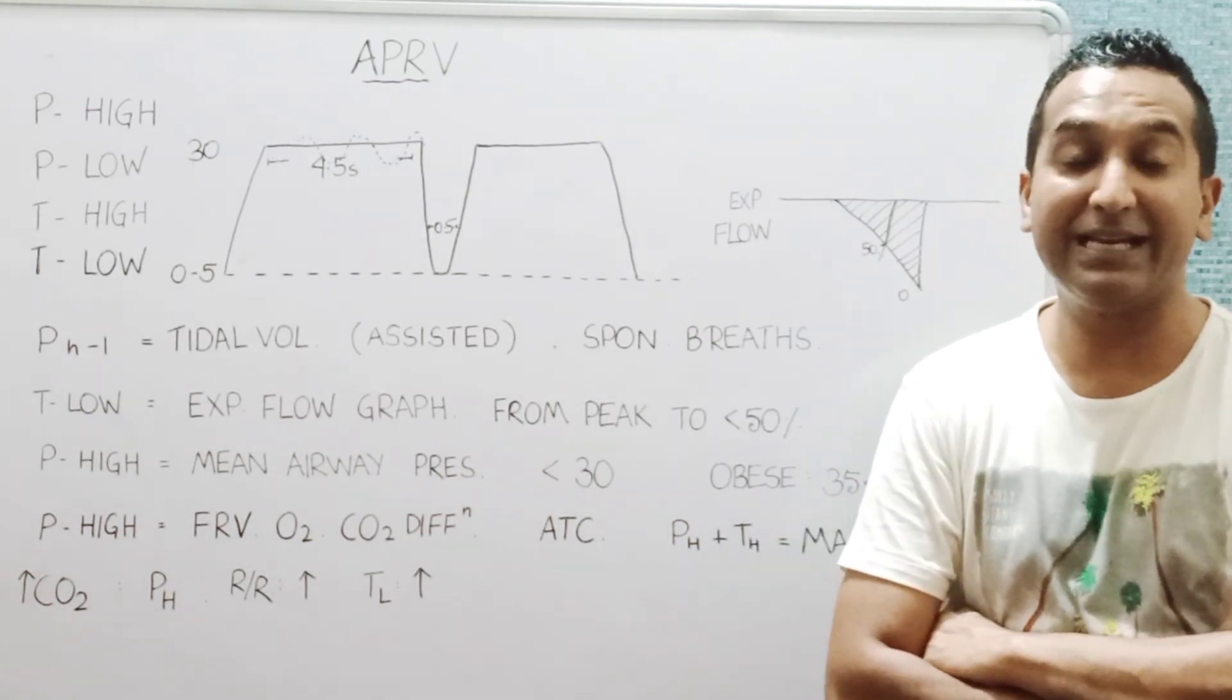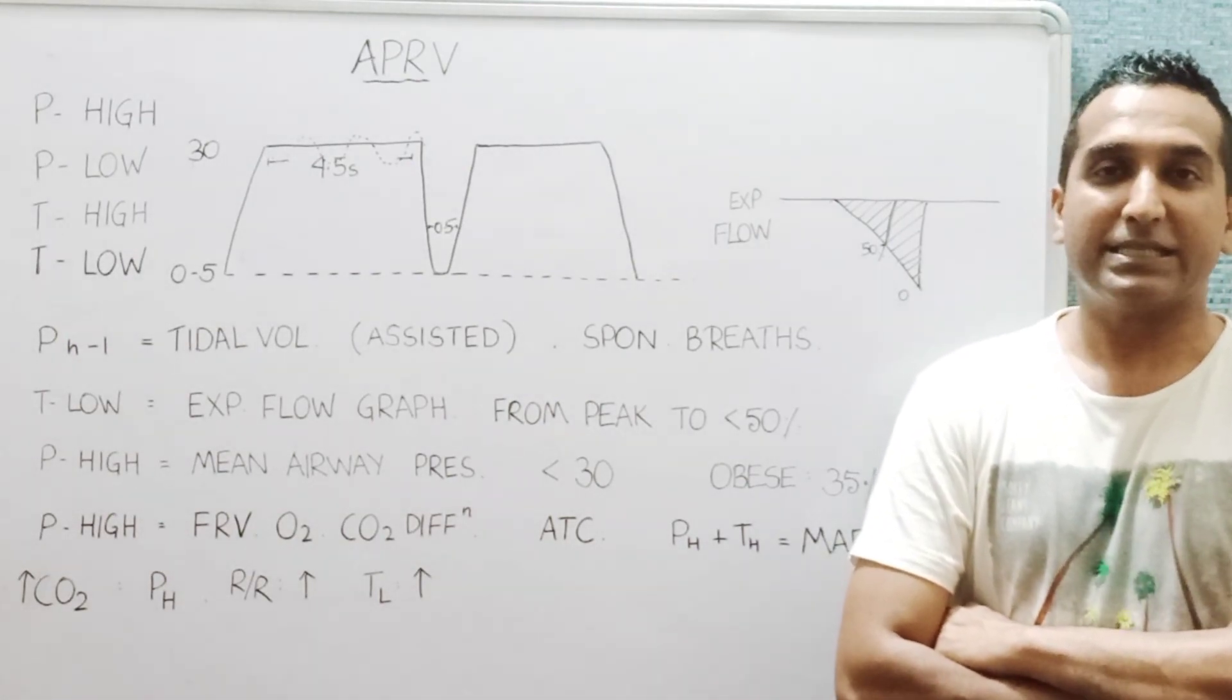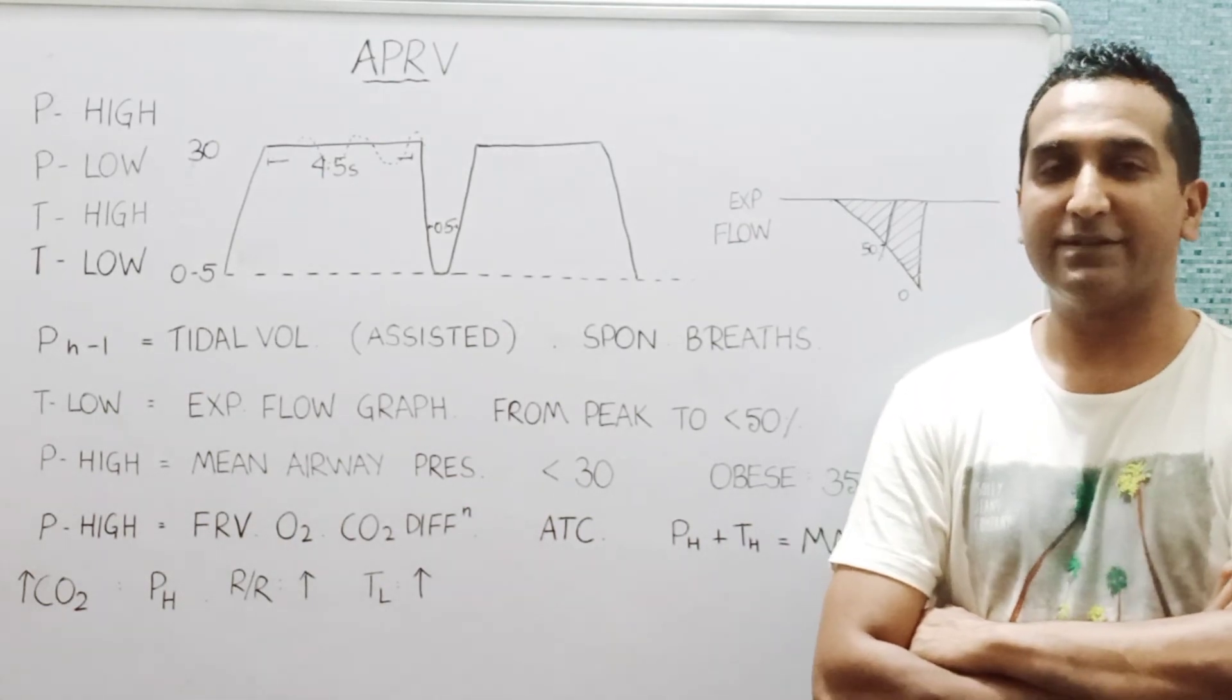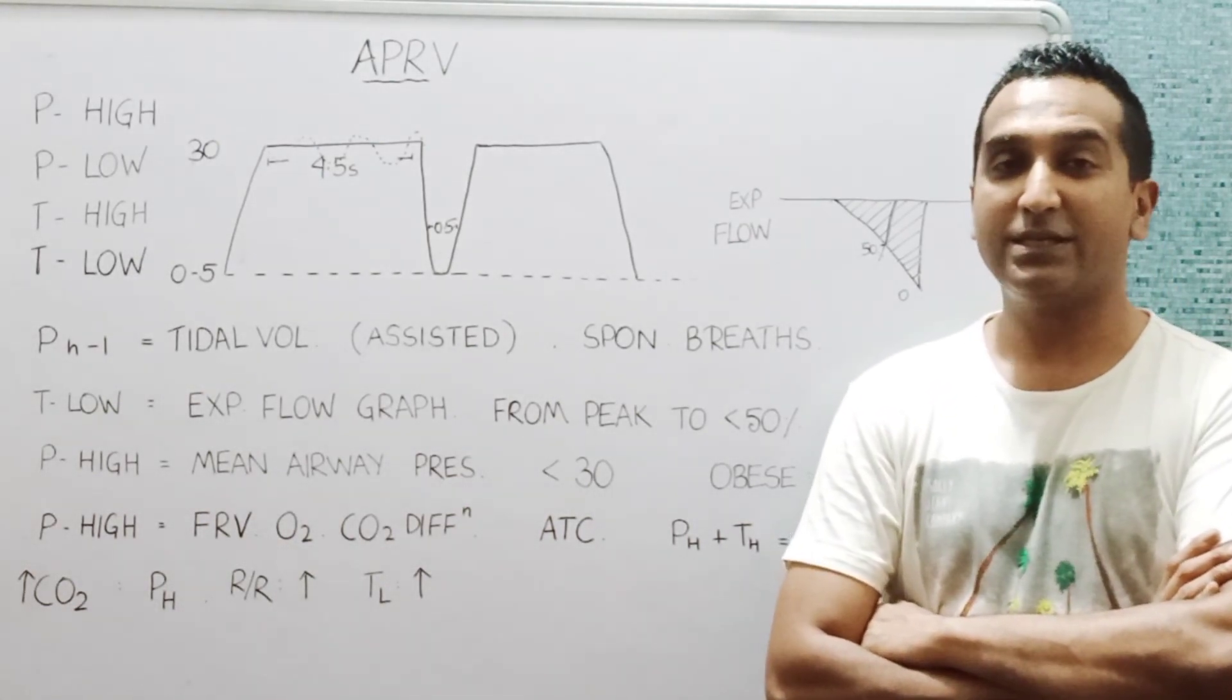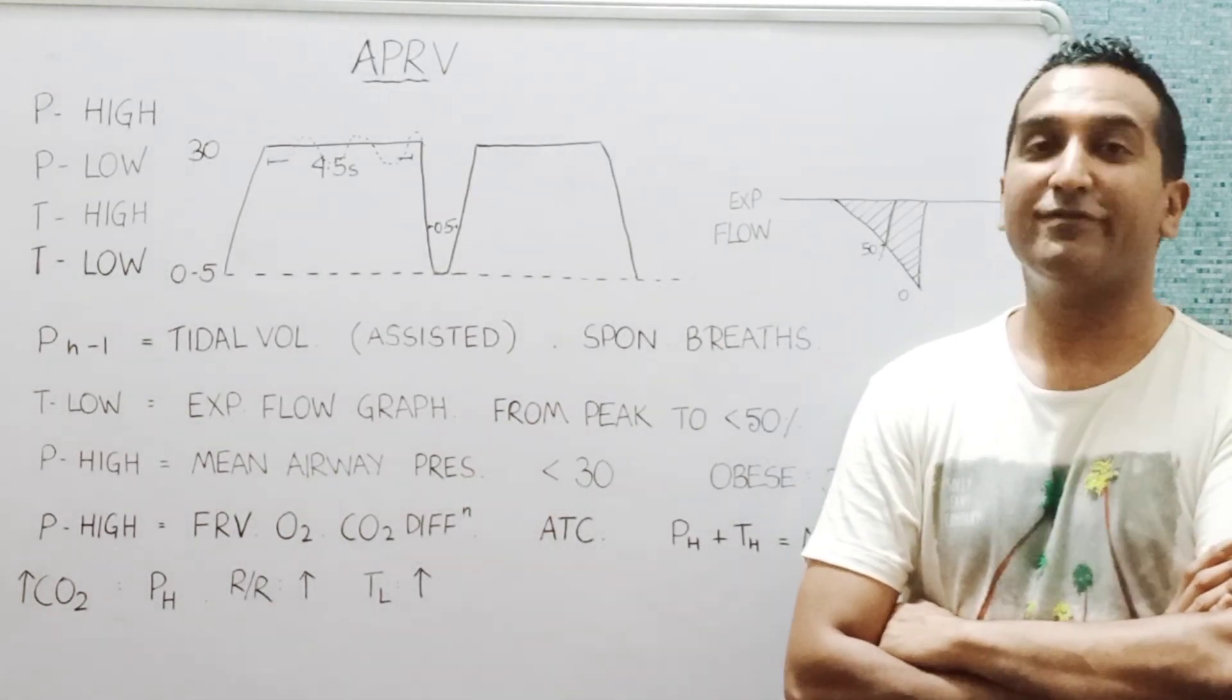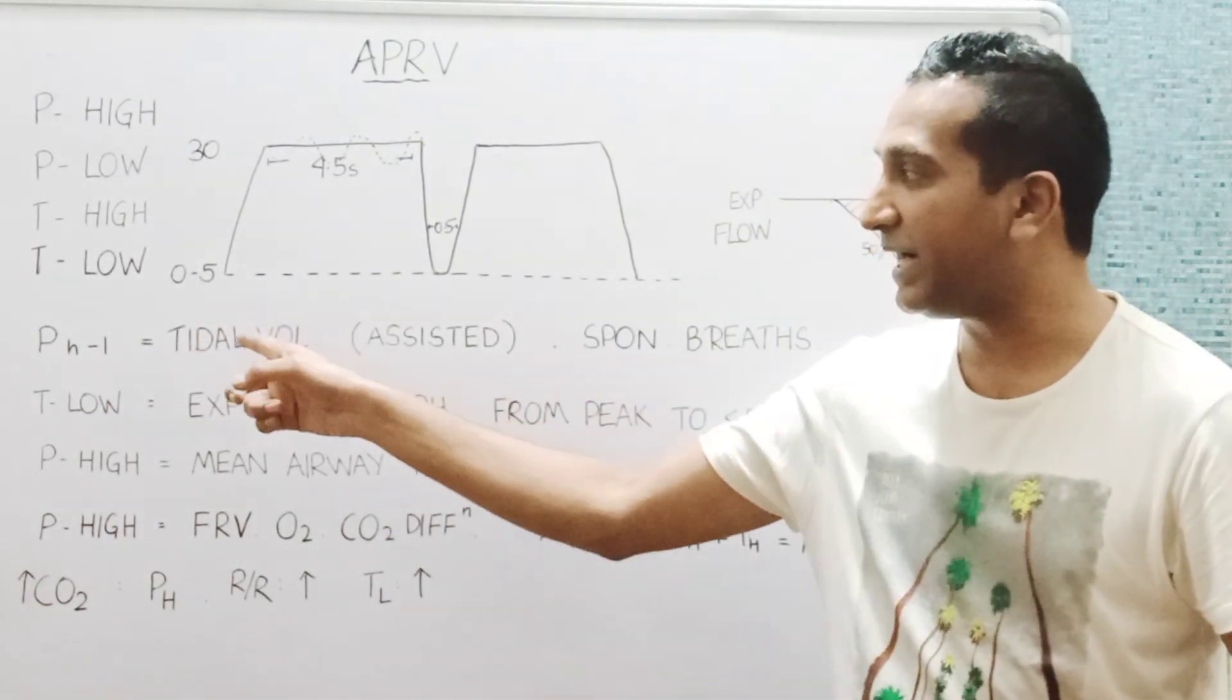So basically if you consider it like PEEP, it's zero P. But nowadays with the paper by Zaw published in Lancet in 2017, there is an interest in keeping it a positive number. So we can look for a P low of five centimeters of water to begin with.